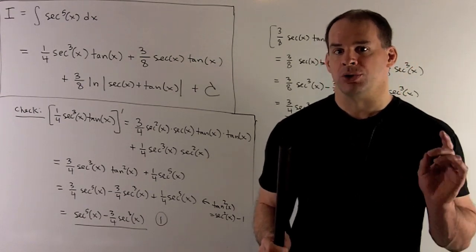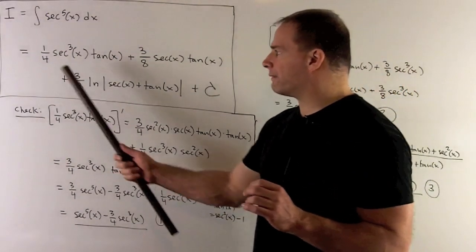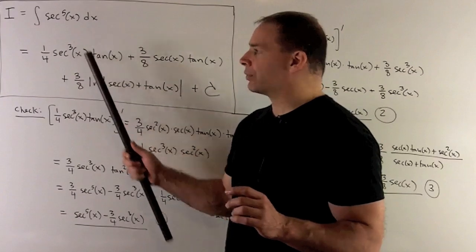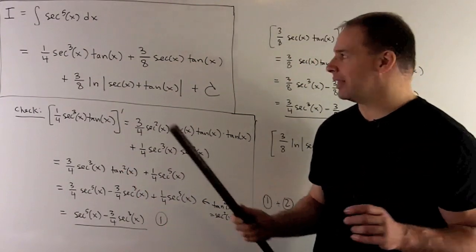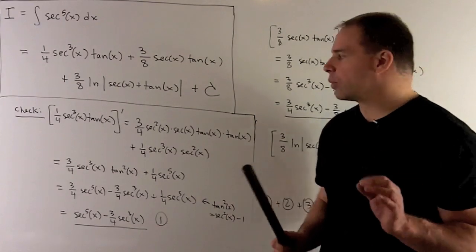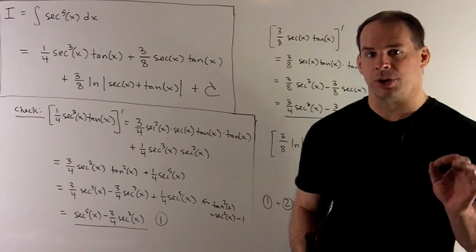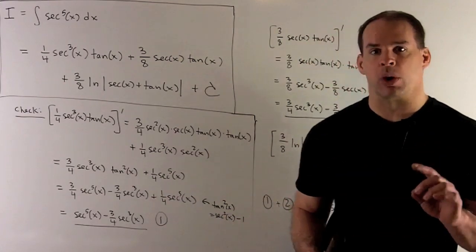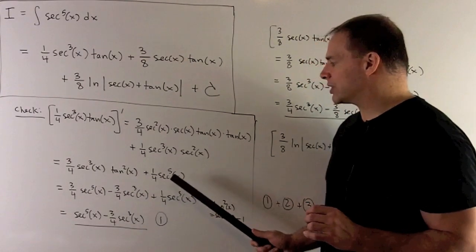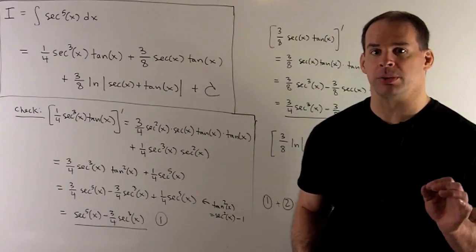Now we want to check our work by taking the derivative and confirming that we get secant x to the fifth power back. This is a big exercise in bookkeeping — we do derivatives one at a time and express everything as powers of secant. For the first term we use the product rule and the chain rule. We get three secant squared times secant tangent times tangent, plus secant cubed times secant squared, which gives three-fourths secant cubed tan squared plus one-fourth secant to the fifth. Replacing tan squared with secant squared minus one yields secant to the fifth minus secant cubed, and multiplying by three-fourths plus the one-fourth secant to the fifth gives secant to the fifth minus three-fourths secant cubed. Call that term one.